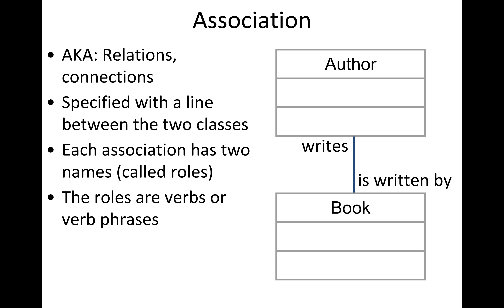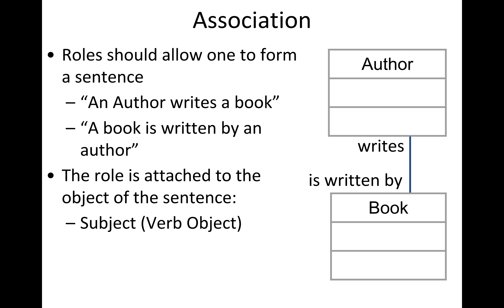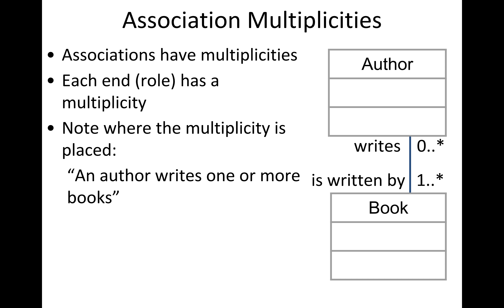The labels we use — 'writes' and 'is written by' — are referred to as the role in the association. The role of the book is that it's written by an author; the role of the author is that the author writes books. The role is written on the side of the corresponding class, and it's a verb phrase that reads like a sentence.